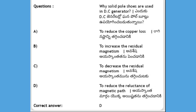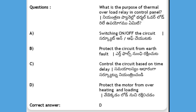Why are pole shoes used in a DC generator? Options: to reduce the copper loss, to increase the residual magnetism, to decrease the residual magnetism, to reduce the reluctance of the magnetic path. The answer is D, to reduce the reluctance of the magnetic path.